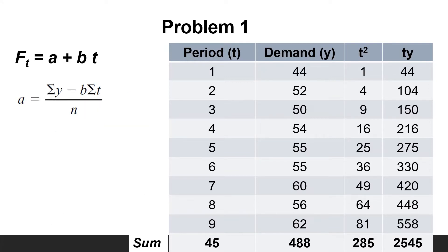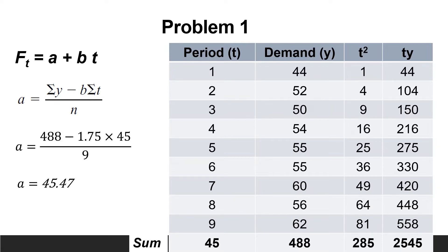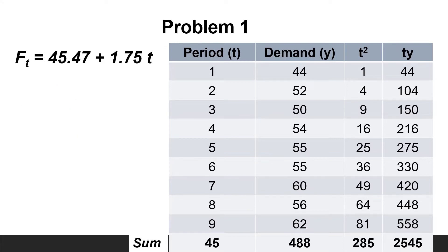Now substitute in the equation of a: a equals 488 minus 1.75 multiplied by 45, all divided by 9, equal 45.47. Knowing the values of a and b enables us to construct the trend line equation to be f(t) = 45.47 + 1.75t. Now we can use this equation to calculate the forecast of the coming two periods, which are period 10 and 11.